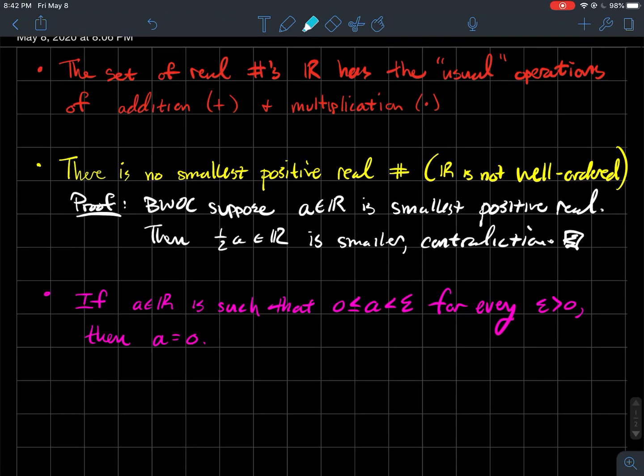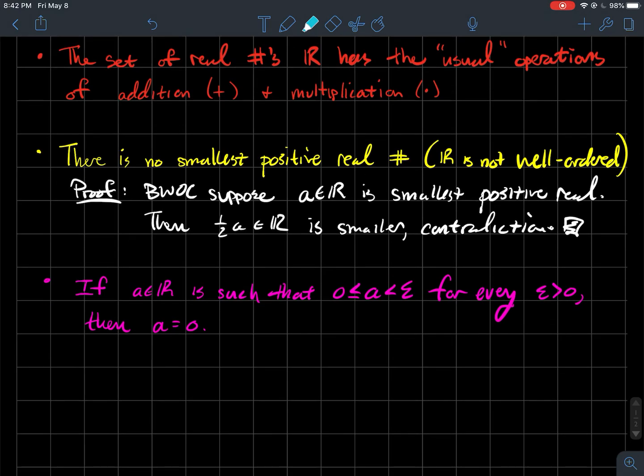Another interesting property of the reals that we'll be using often, if A is a real number, such that A is between zero and epsilon for every positive number epsilon, then A itself has to be zero. So in other words, what this is trying to say is if A is arbitrarily close to zero, that is another way to say this part here, then A has to be zero. So why should that make sense? Like, this is pretty crazy, right?